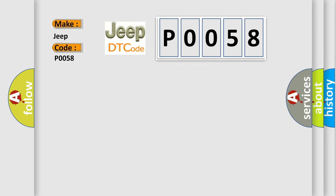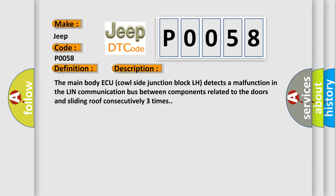The basic definition is LIN communication bus malfunction. Here is a short description of this DTC code: The main body ECU side junction block LH detects a malfunction in the LIN communication bus between components related to the doors and sliding roof consecutively three times.